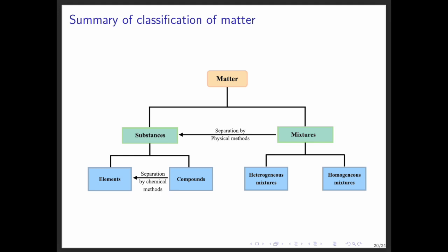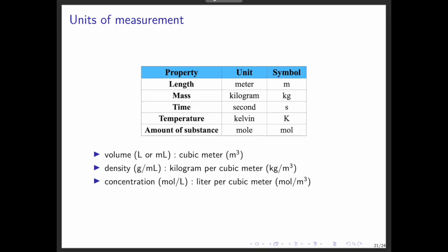After finishing the qualitative part of matter, let's discuss the quantitative aspect. Chemistry involves measurement. The physical properties of matter are determined by measuring quantities such as mass, volume, length, time, temperature, pressure, and concentration.